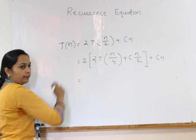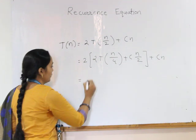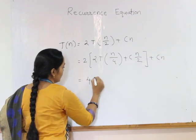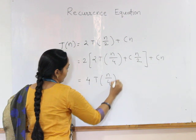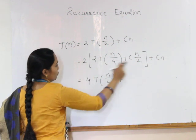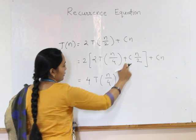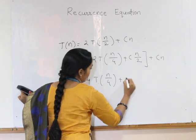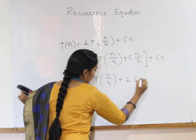We multiply 2 with the bracket, we get 4T of n by 4 plus 2cn. This 2 gets cancelled, so we have 2cn.